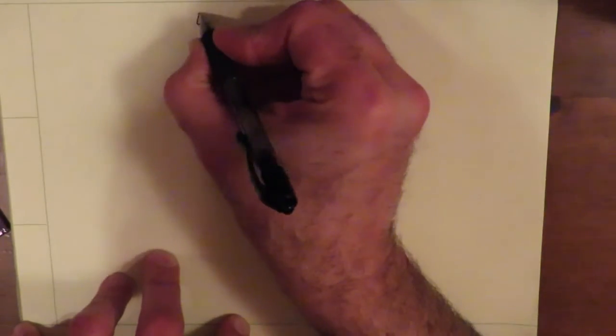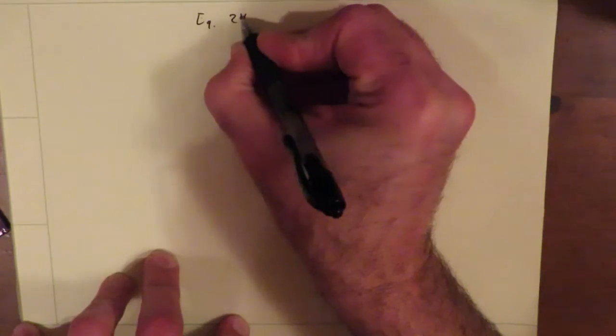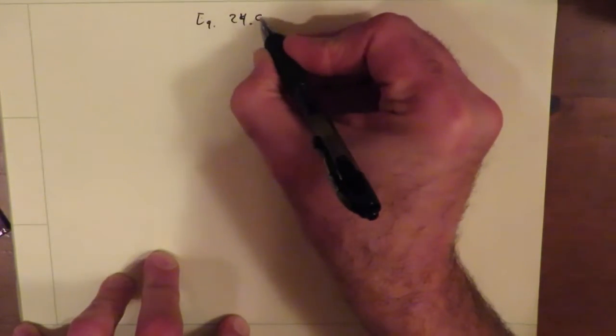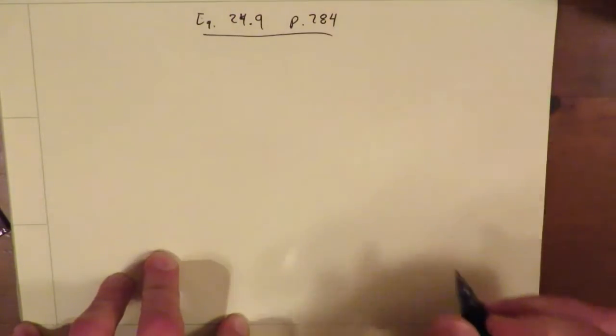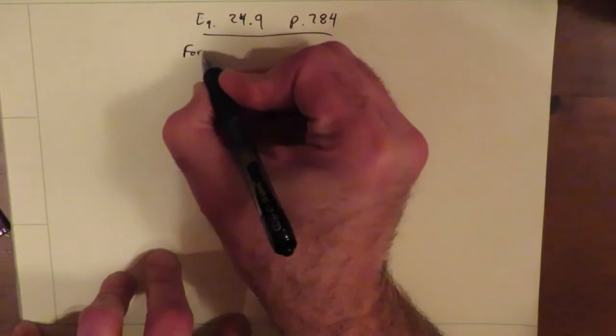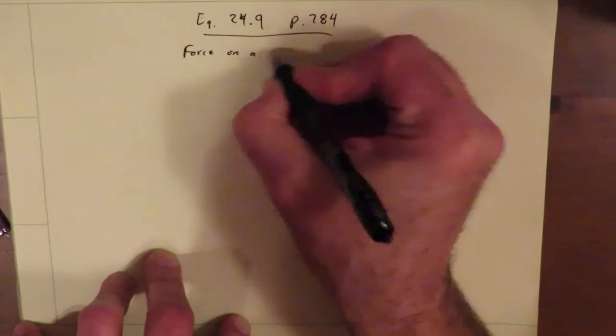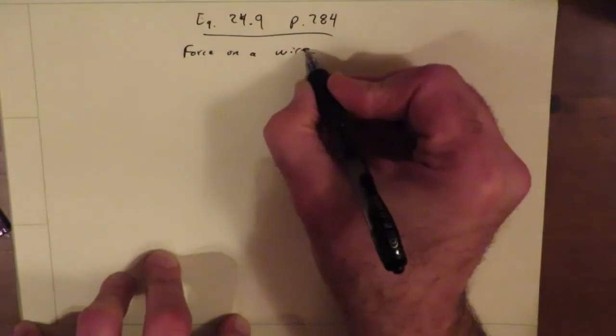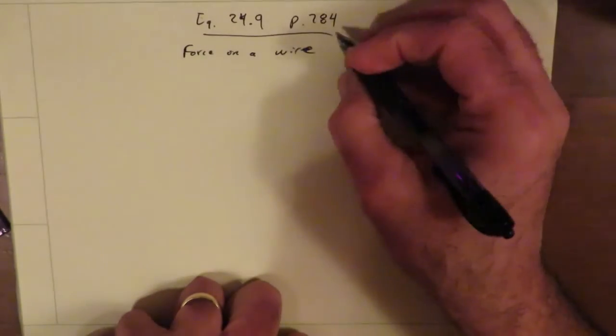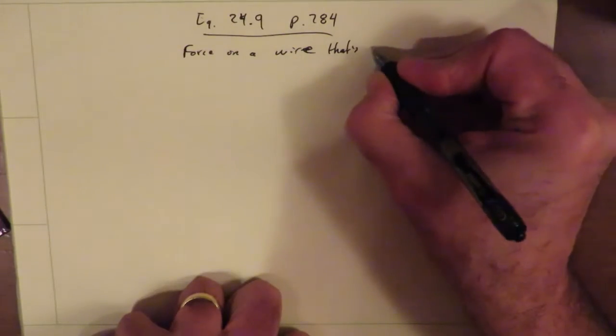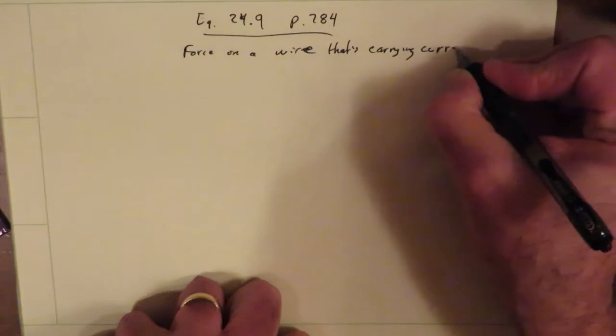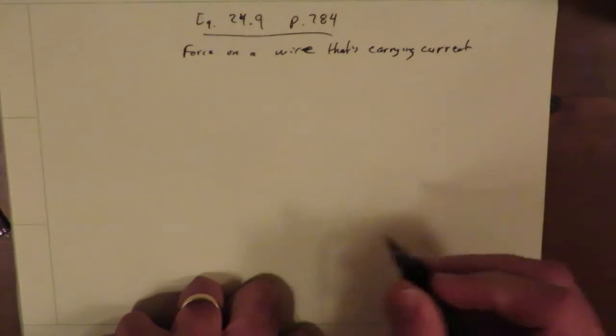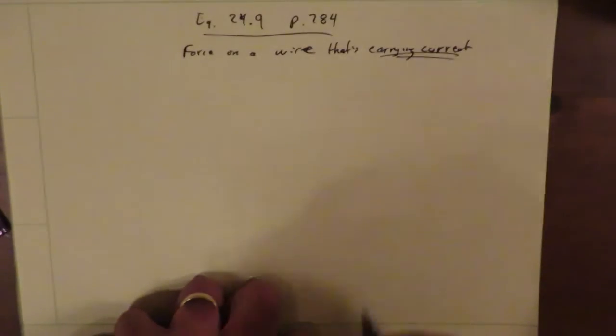So I'll do this. This is equation 24.9, and is on page 784 in your textbook. Okay, and this is for the force on a wire. Force on a wire. Well, okay, that's conducting. That's carrying current. If there's no current flowing through it, there is going to be no force on the wire, so it has to be carrying current. I should make that clear.